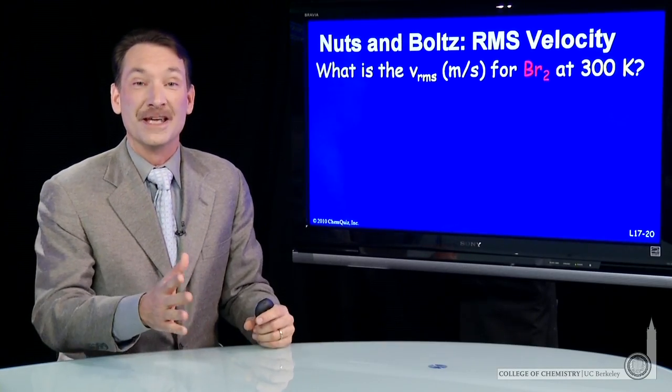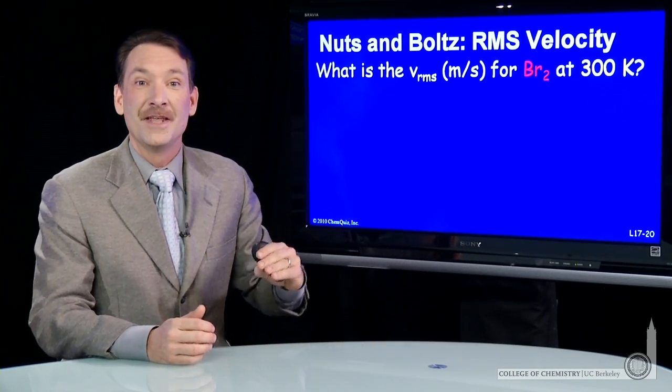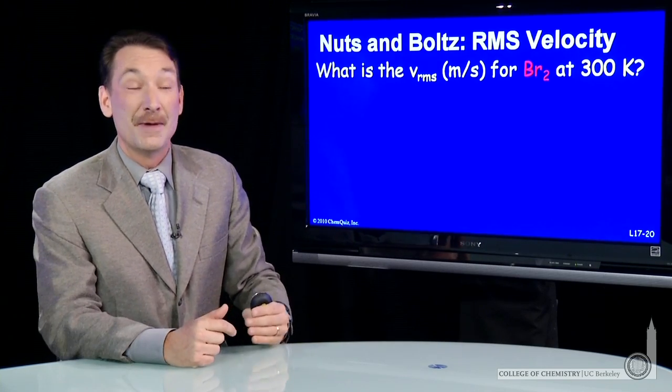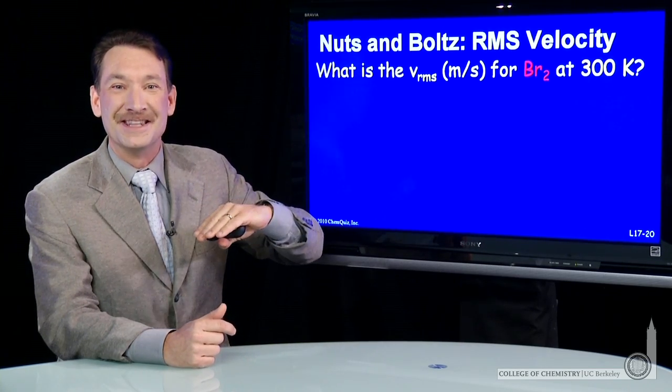Let's look at the root mean squared velocity for bromine at 300 Kelvin in a sample of gas in our nuts and bolts section. And in honor of Maxwell Boltzmann distribution, we'll spell bolts with a Z this time.